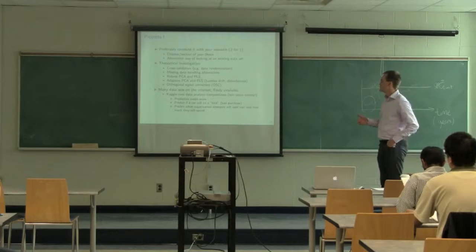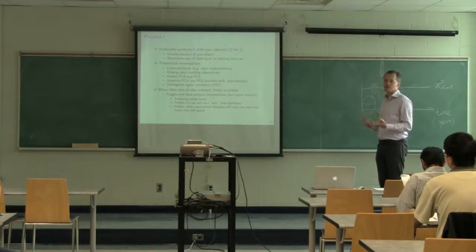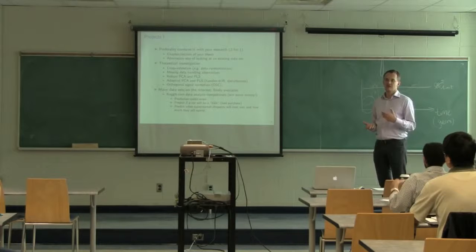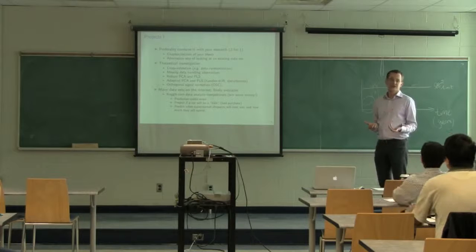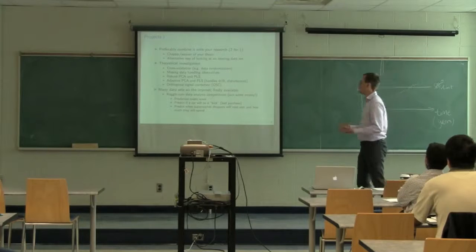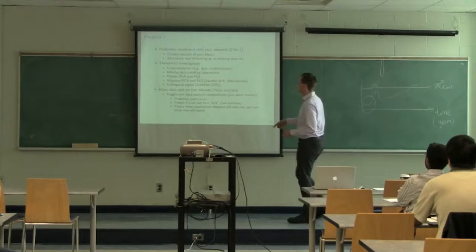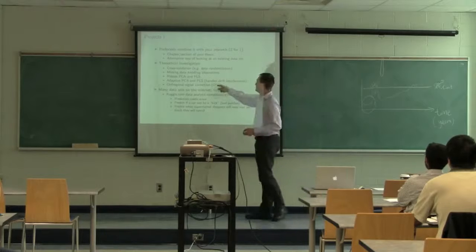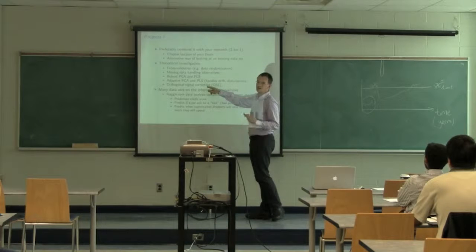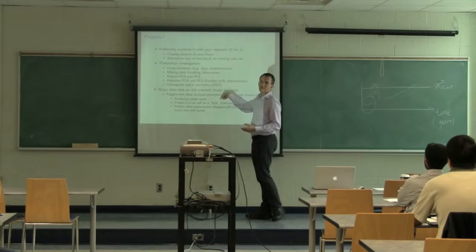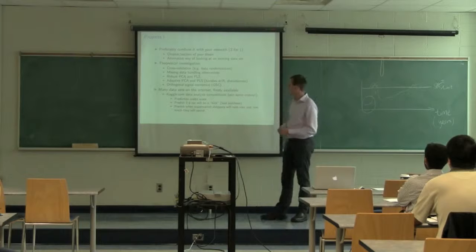Sometimes when we're doing regression models, the variance in X isn't always applicable to Y. So how can we first remove uninteresting variability from our dataset in X before we use that to predict Y?